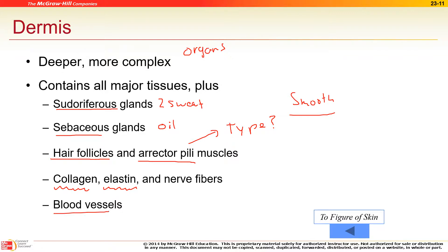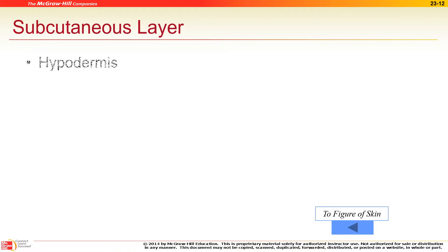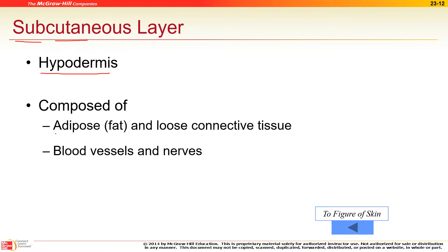There is no blood supply in the epidermis, but the dermis does have blood vessels and nerves. Below the skin is the subcutaneous tissue, also called the hypodermis. Adipose is another word for fat. The skin has tight connective tissue, while fat has more loose connective tissue.